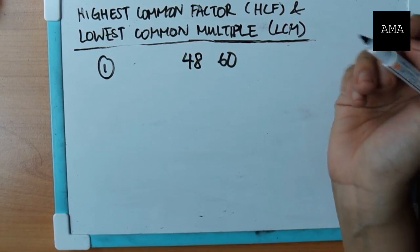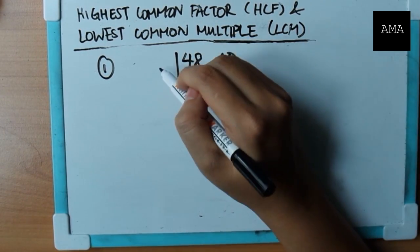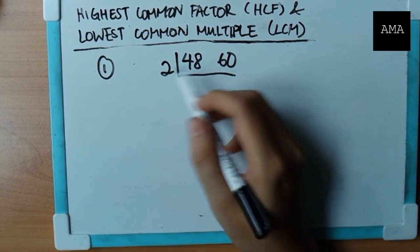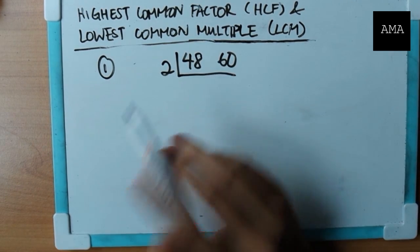You have to find the highest common factor first. Just divide by two first, because two is a common prime factor. So you divide by a common prime factor first. Two is the easiest one because they're both even numbers.